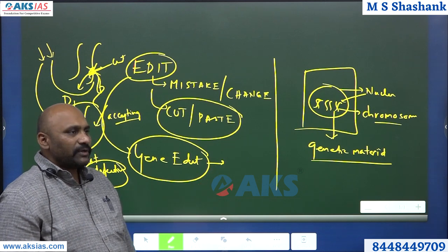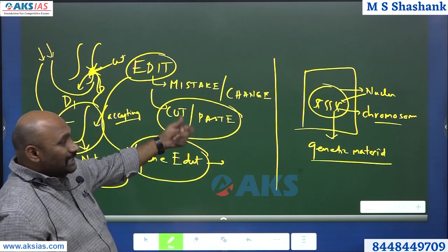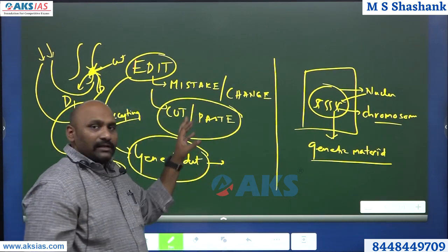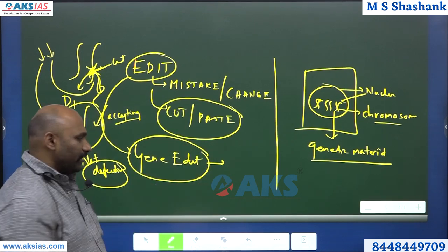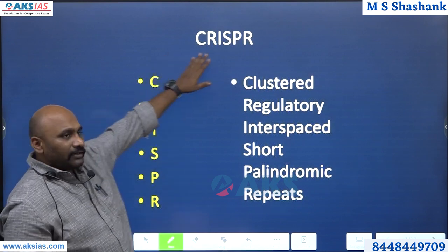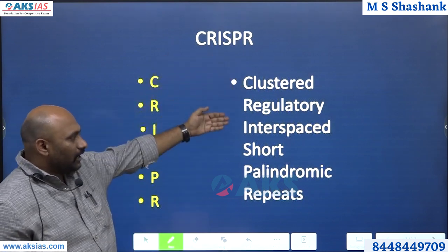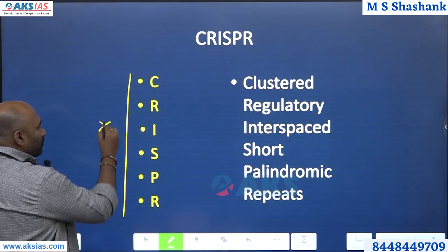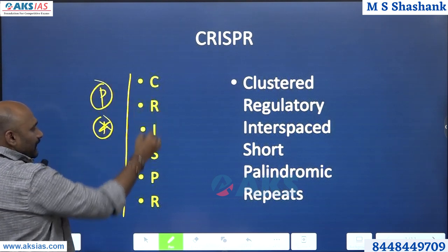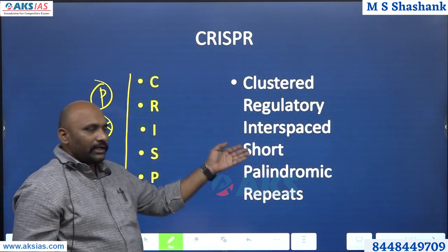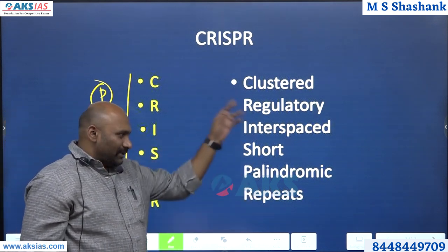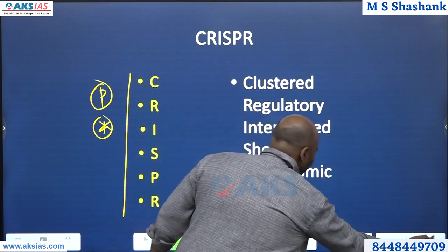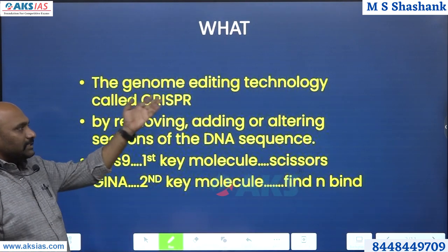Gene editing has recently been in use for clearing sickle cell anemia. Under that process, this concept has gained attention. So let's look into what gene editing is. CRISPR — Clustered Regulatory Interspaced Short Palindromic Repeats — this is what you have to remember for your prelims. This concept utilizes the process of gene editing fundamentally. It is a genome editing technology that removes, adds, or alters sections of the DNA sequence.